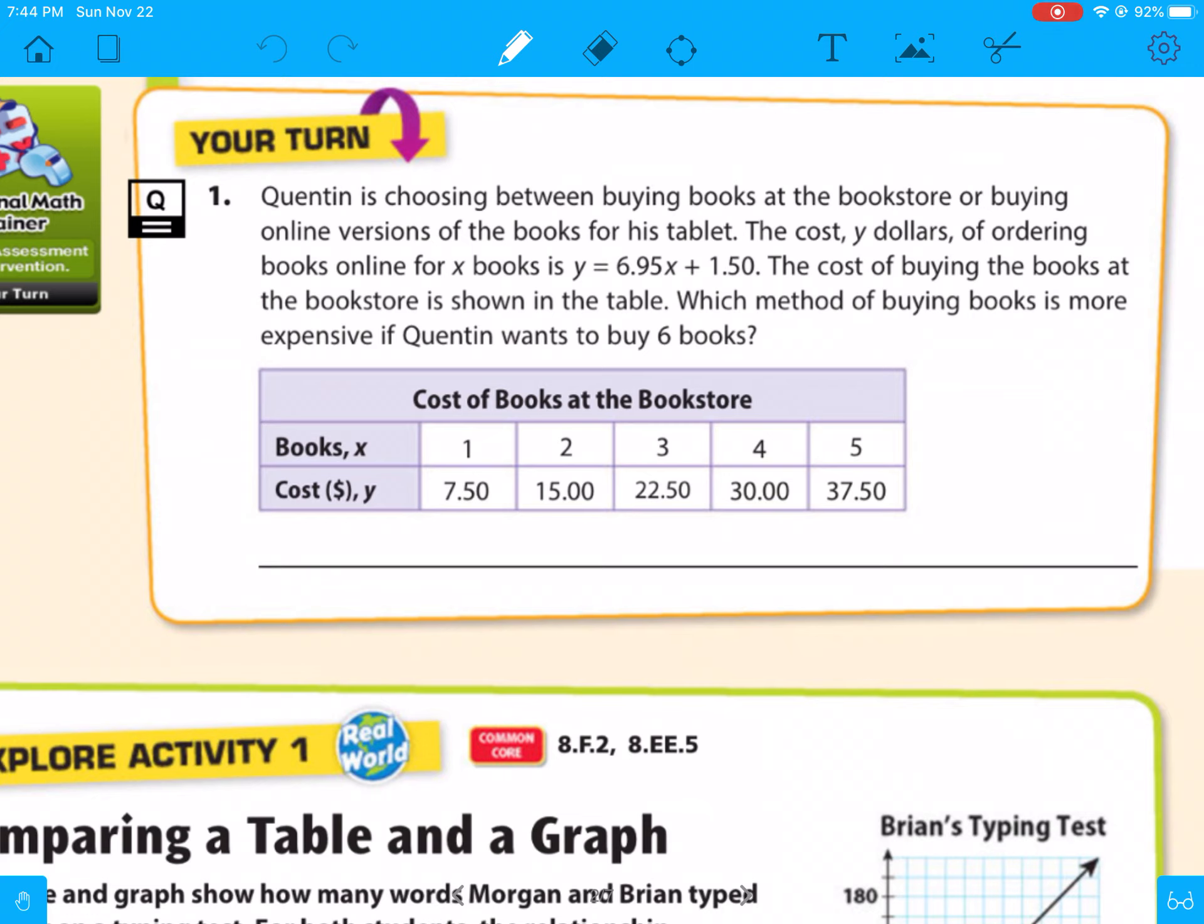So if you look here, it says, Quentin is choosing between buying books at a bookstore or buying online versions of the book for his tablet. The cost y dollars of ordering books online for x books is y equals 6.95x plus 1.50. So it's $6.95 per book plus $1.50 charge. The cost of buying books at the bookstore is shown in the table. So which method of buying books is more expensive if he wants to buy 6 books? So we already have the first one. Now we can look here.